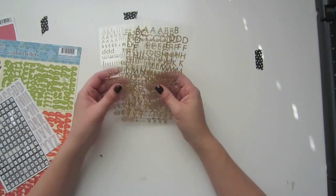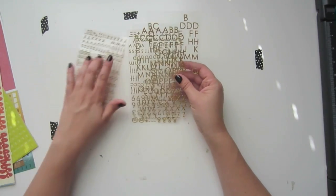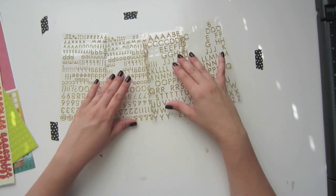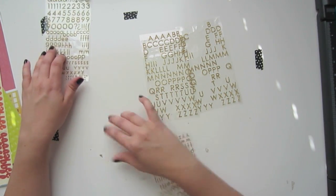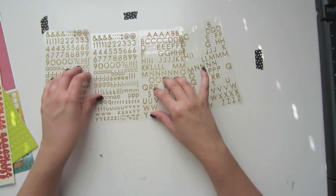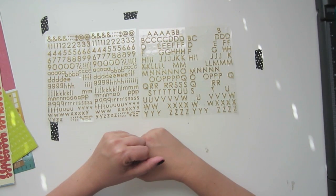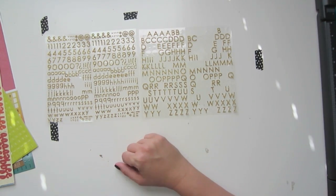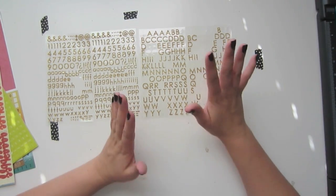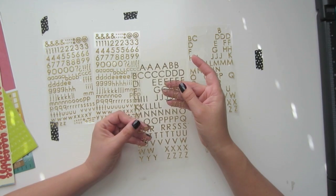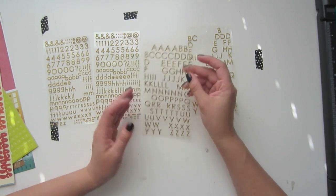The other favorite that I have for alphas are these gold glittery alphas. And I threw away the packaging, but I'm pretty sure that these are Recollection stickers. And these are two different packs. They come in uppercase and lowercase, and they're just the perfect color of gold. I love these. I use these a ton in my Project Life.